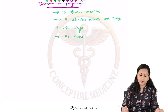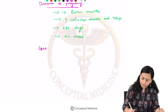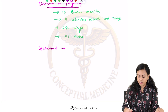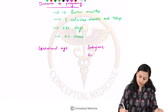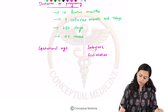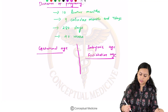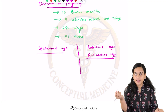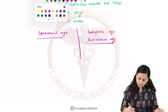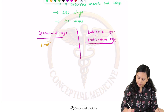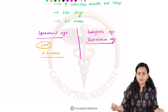We have already seen that there is something called gestational age and embryonic age, which can also be called fertilization age. Gestational age is how obstetricians denote the duration of pregnancy, and embryonic age is how embryologists denote the duration of pregnancy. The gestational age is calculated from the date of LMP, which is 2 weeks more than the embryonic or fertilization age.